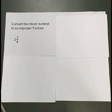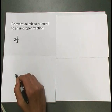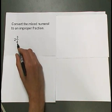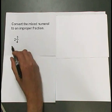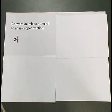We call this a mixed numeral because it has a whole number part, the 2, and a fraction part, the 3 fourths. We want to convert this entire number to a single fraction.